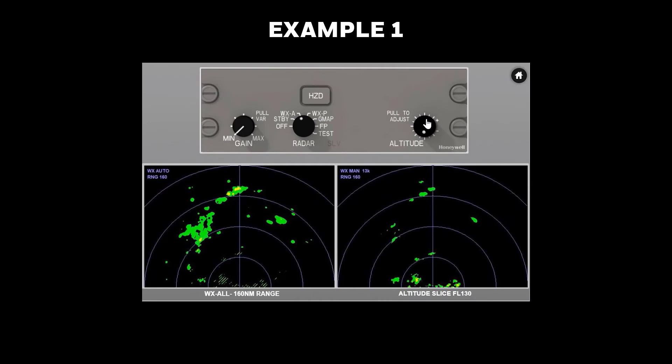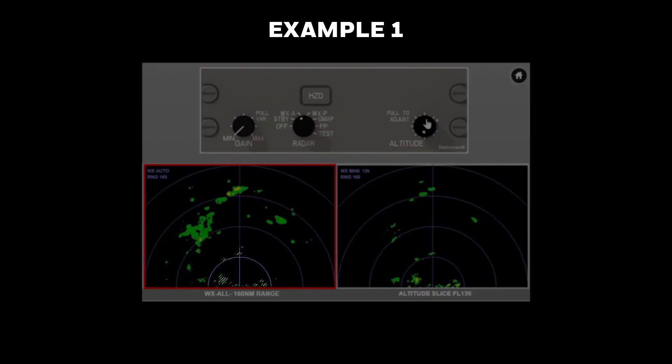In this example, the aircraft is at flight level 400 over Louisiana. Looking at the auto mode on the left, there are some cells with low tops and low reflectivity near the aircraft, which are non-threatening. This is indicated by the hashed lines within approximately 40 nautical miles.